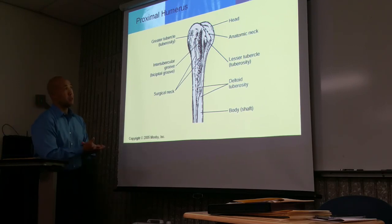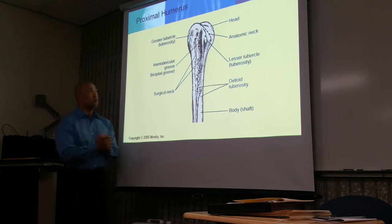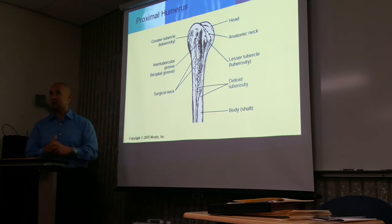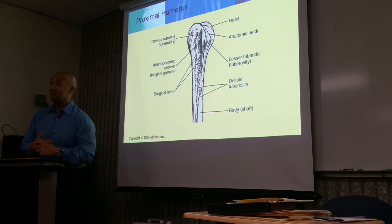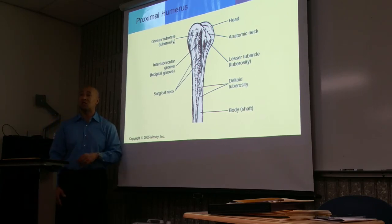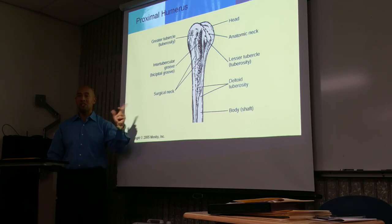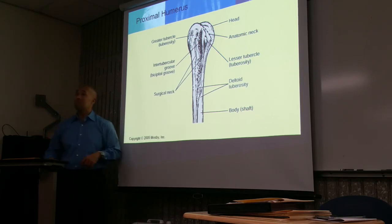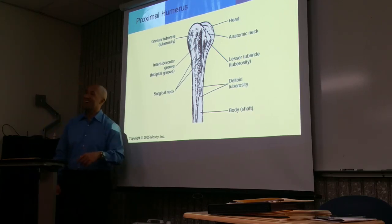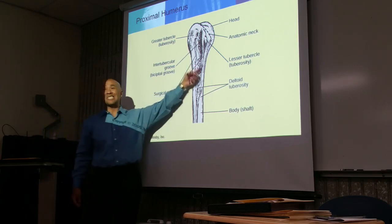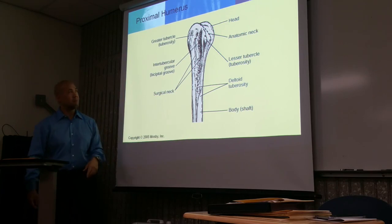Below the bicipital groove, you have another neck called the surgical neck. It's called the surgical neck because this is the most common site of fractures in the humerus. This most commonly occurs in the elderly when they're falling and trying to break their fall — that's what snaps.